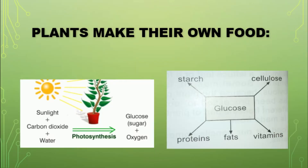Plant foods contain a whole range of different nutrients. They can contain carbohydrates, starch, sugar, protein, fats, vitamins and minerals. Once a plant makes glucose, it uses the glucose to make the other types of nutrients.